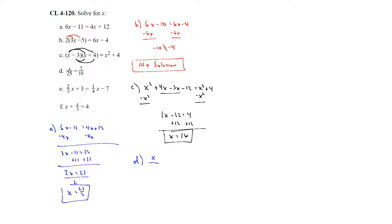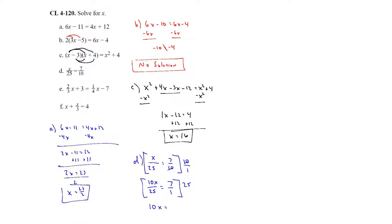For part d, we have a proportion: x over 25 equals 7 over 10. I'll use inverse operations. First multiply both sides by 10, giving 10x over 25 equals 7. Then multiply both sides by 25, giving 10x equals 175. Dividing by 10 gives x equals 17.5. There are different ways you could solve a proportion, and any of them are fine.